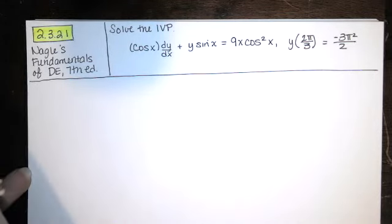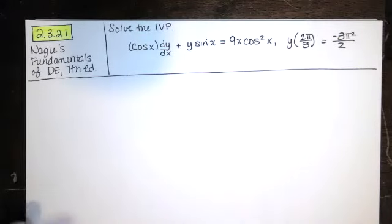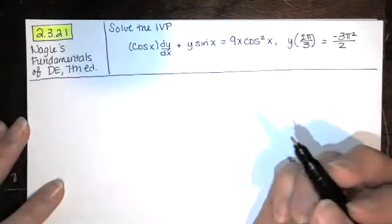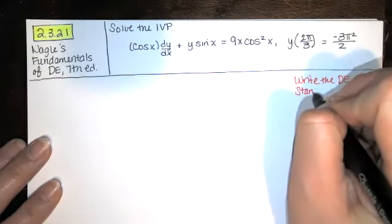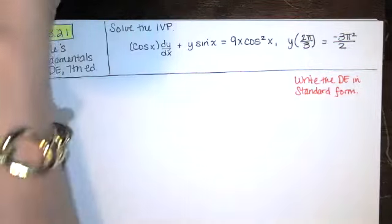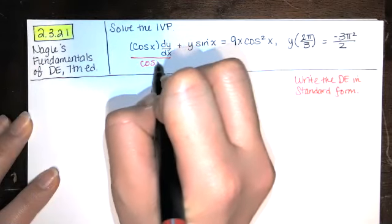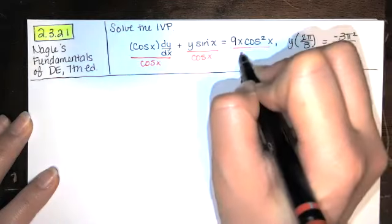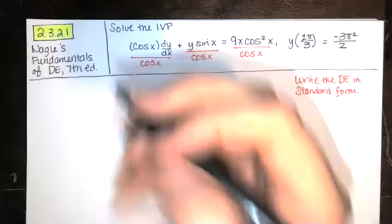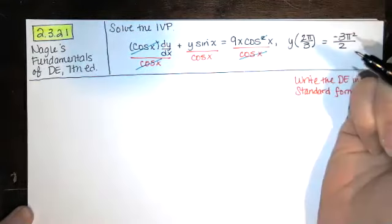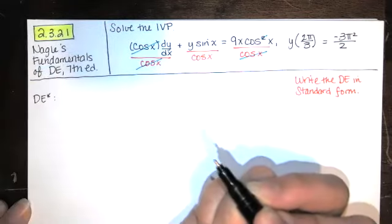We also have an initial condition. We're going to start this problem the same way we start all first-order linear ODE problems solved with an integrating factor: we write the differential equation in standard form. That involves getting dy/dx by itself, so we divide every term by cosine of x and simplify. The cosines reduce, and sine over cosine can be written as tangent of x.